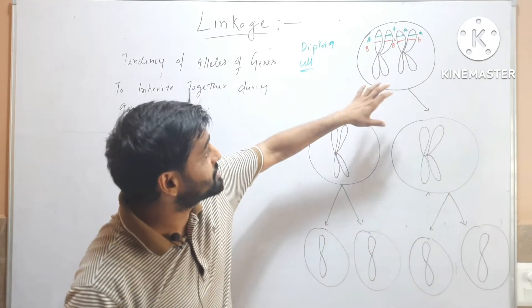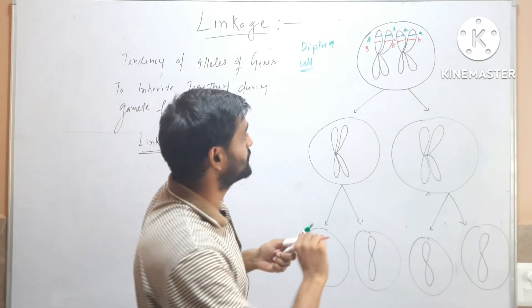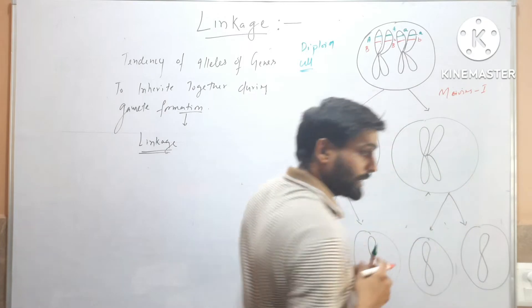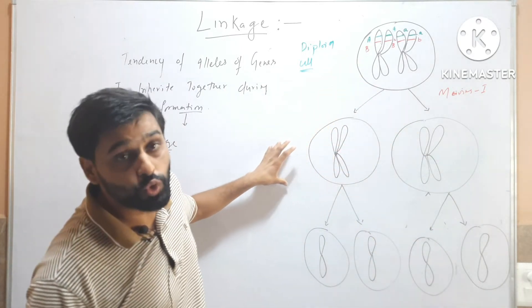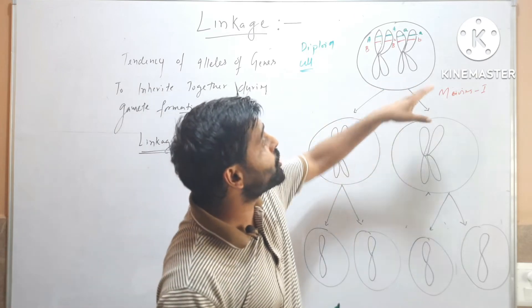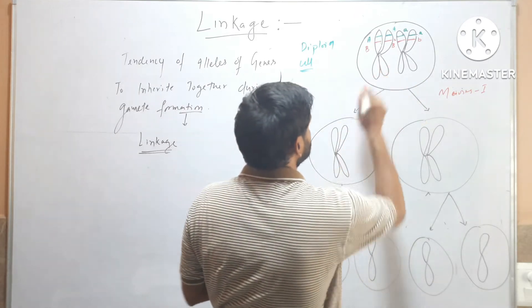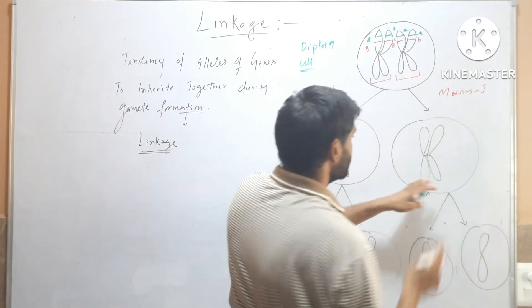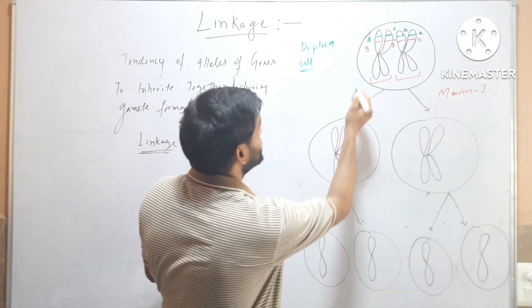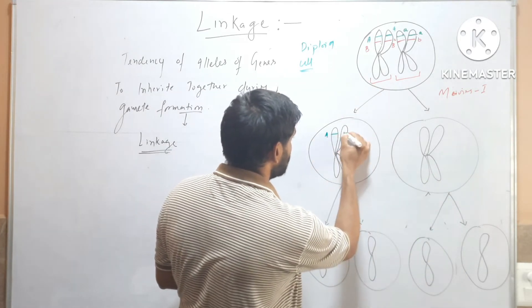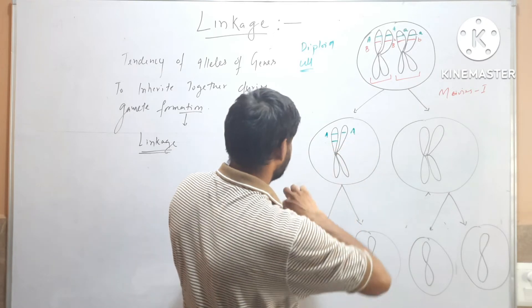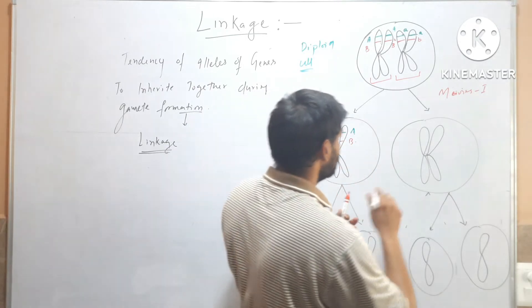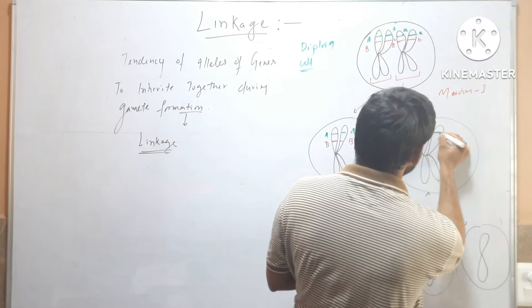During gamete formation, meiosis I will occur first. During meiosis I, the cell divides into two different cells and the homologous chromosomes separate — one chromosome goes to one cell and the other chromosome goes to the other cell. So one cell gets capital A and capital B, and the other cell gets small a and small b.